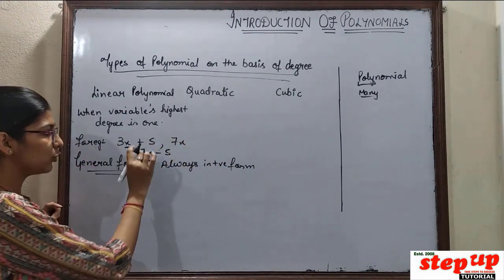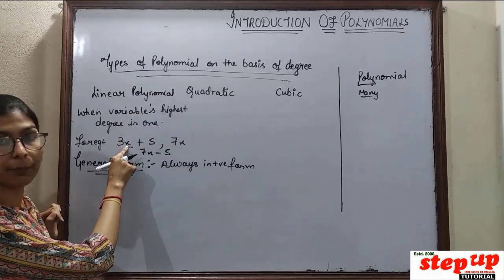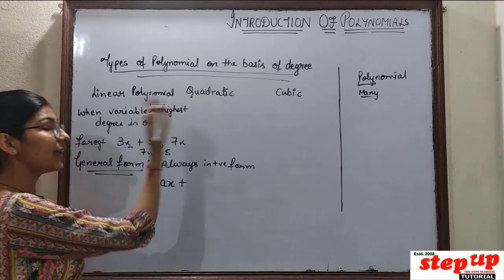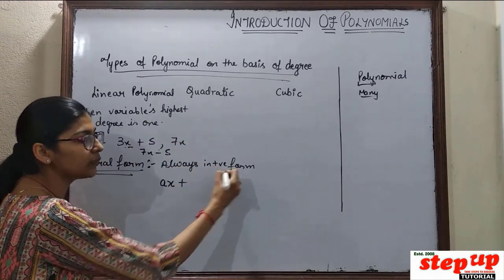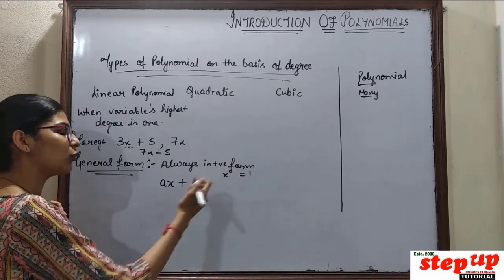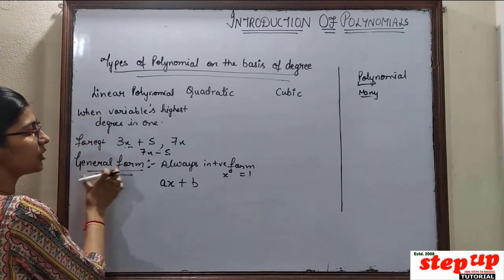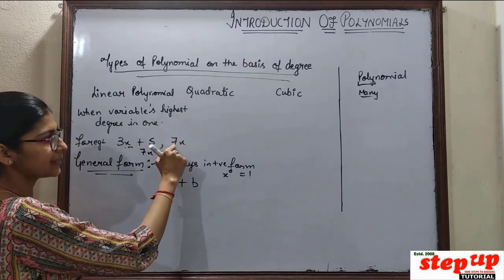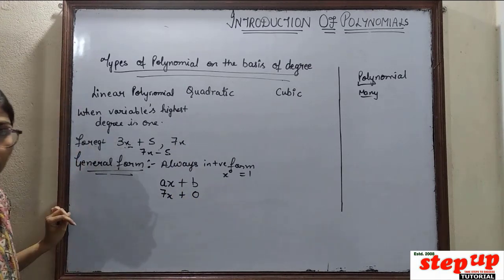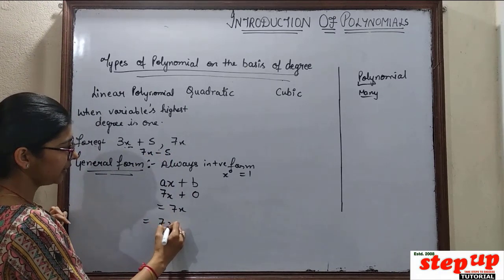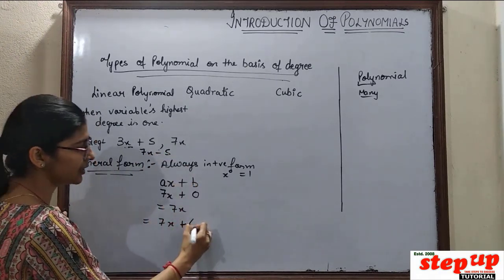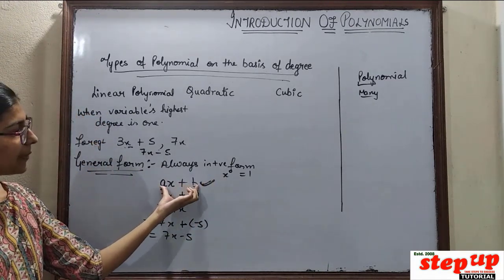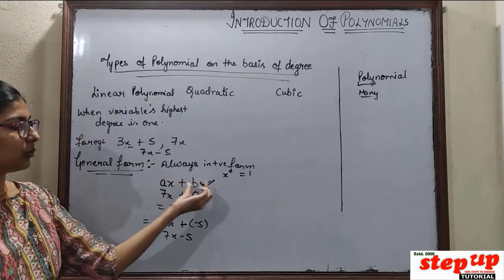If you want to represent 7x minus 5 in general form: x stays as x, coefficient is 7, then plus, and since the constant is minus 5, in general form you write plus and substitute minus 5. So 7x minus 5 you can comfortably represent this way. The general form is always in maximum terms. In linear polynomial, there are two terms — one and two.